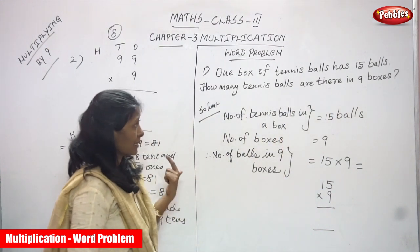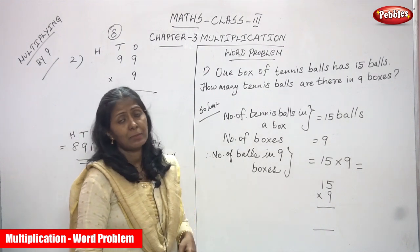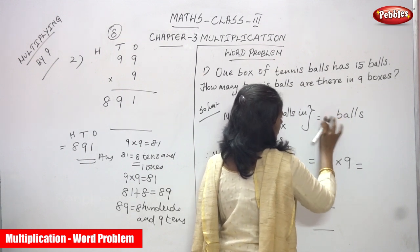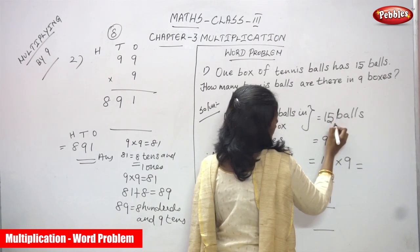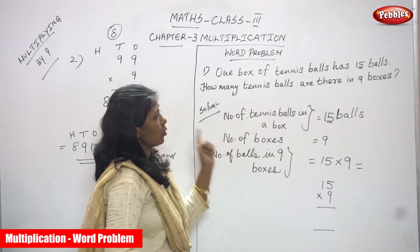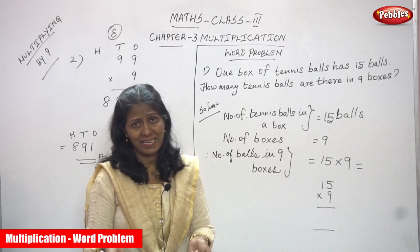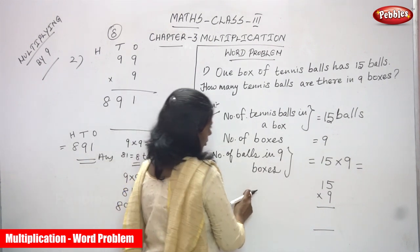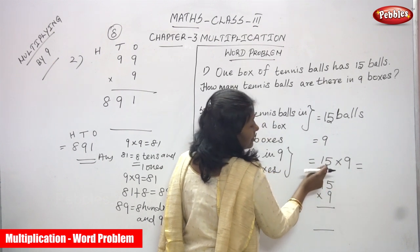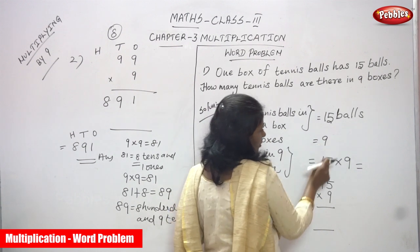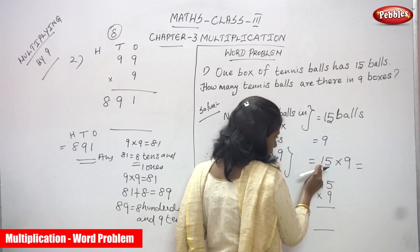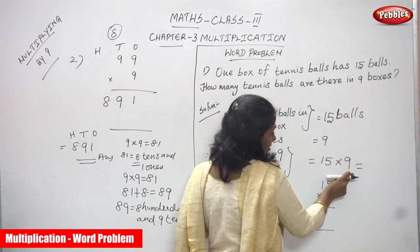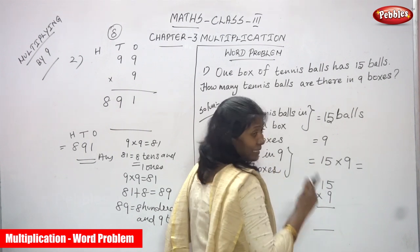We have to find how many tennis balls are there in 9 boxes. That means we multiply: 15 balls in a box multiplied by 9 boxes. This 15 is the number of balls in a single box, and 9 is the number of boxes. Since one amount is given and we are asked for many, this is a multiplication problem.